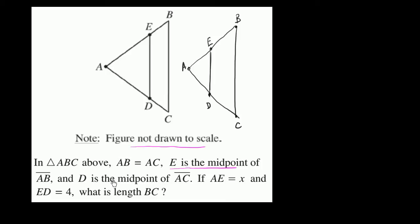So let me mark this off. E is the midpoint of AB, so that means AE is equal to EB. And D is the midpoint of AC. We know that AC is the same length as AB. So AD is going to be the same length as that, which is also the same length as that, which is the same length as that.